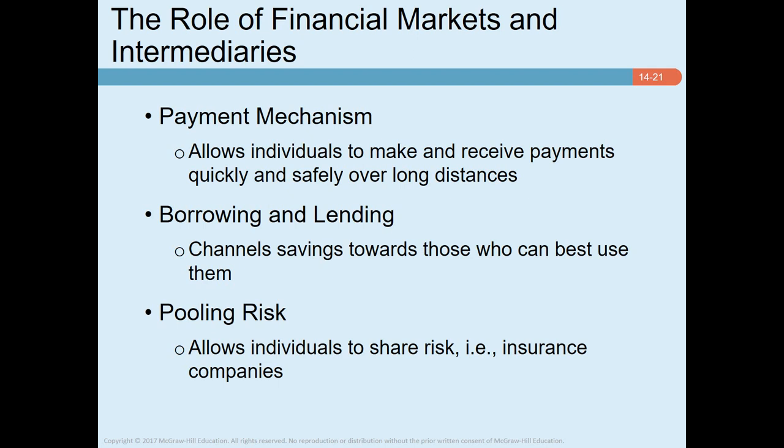The second role is borrowing and lending. Almost all financial institutions are involved in channeling savings towards those who can best use them. For instance, if Mr. Jones has more money than he currently needs and wishes to save for a rainy day, he can put the money in a bank savings deposit. If Mr. Smith wants to buy a car now and pay later, he can borrow money from the bank. Companies with profitable investment opportunities may borrow from a bank or raise finance by selling new shares or bonds. Governments also often run at a deficit, which they fund by issuing large quantities of debt.